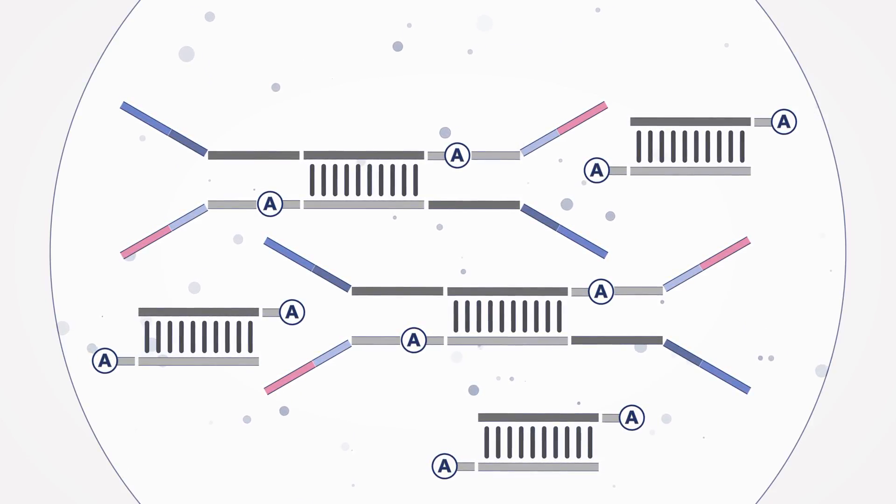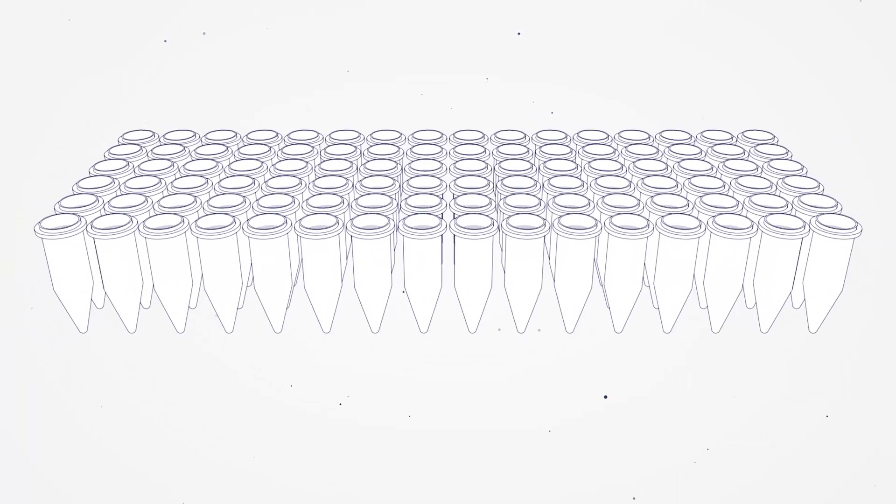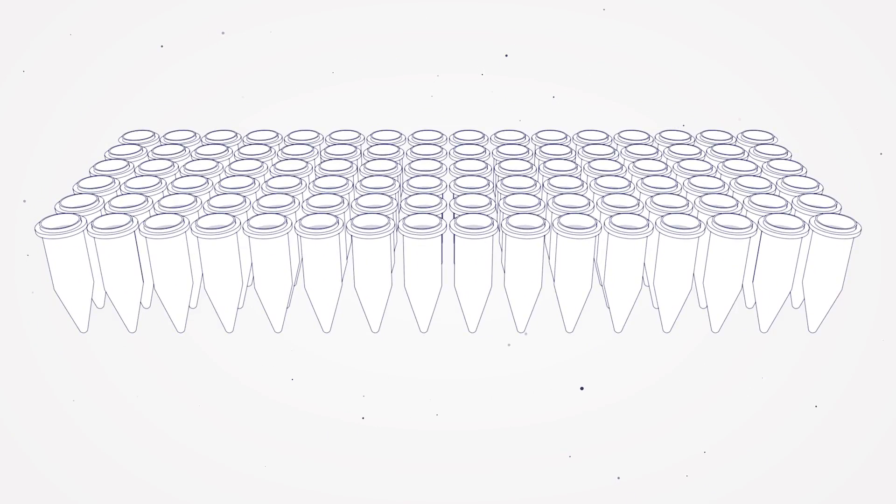QIAseq adapters are dual barcoded and consist of a unique combination of two nucleotide ID barcodes, so you can multiplex up to 96 samples in the same sequencing run. This reduces costs and controls the amount of data you generate.